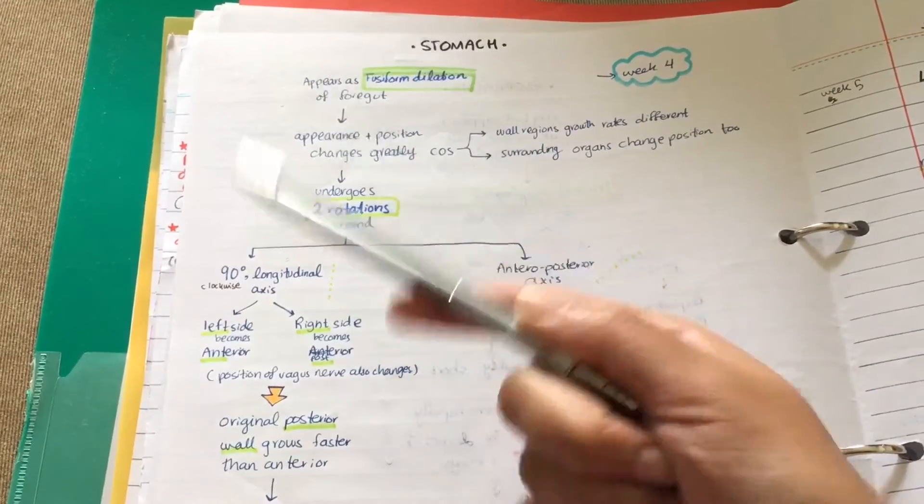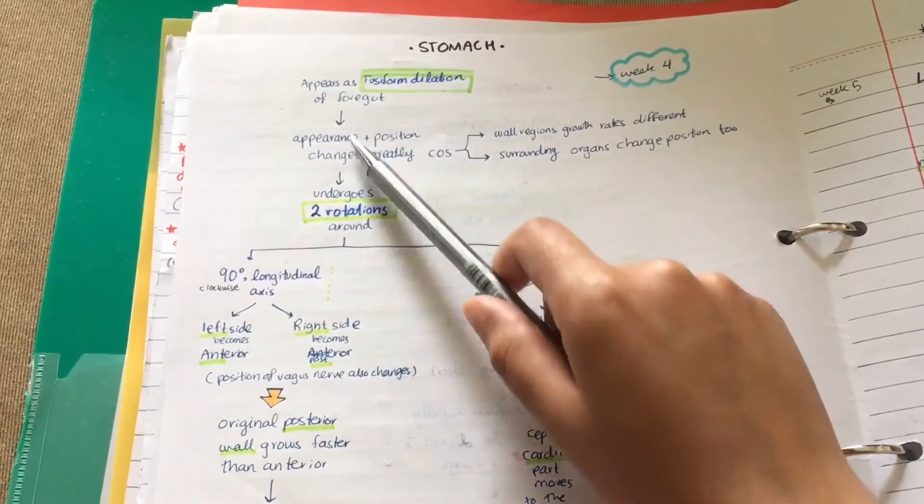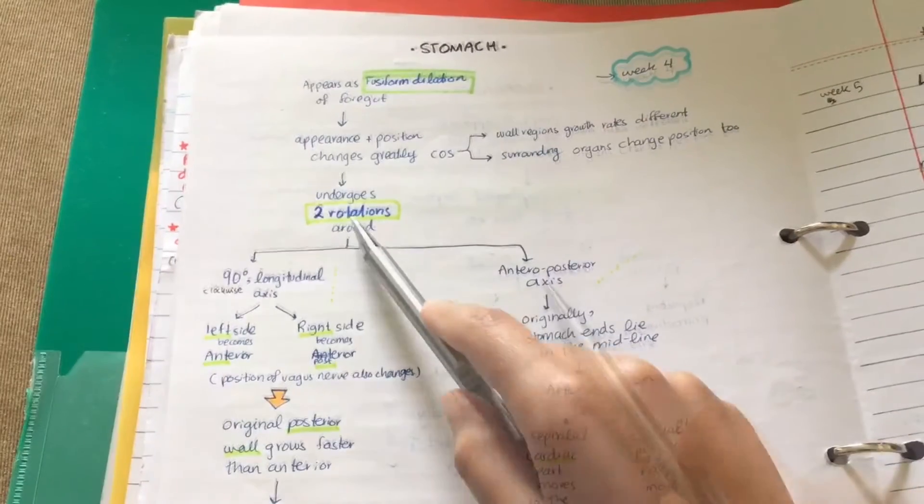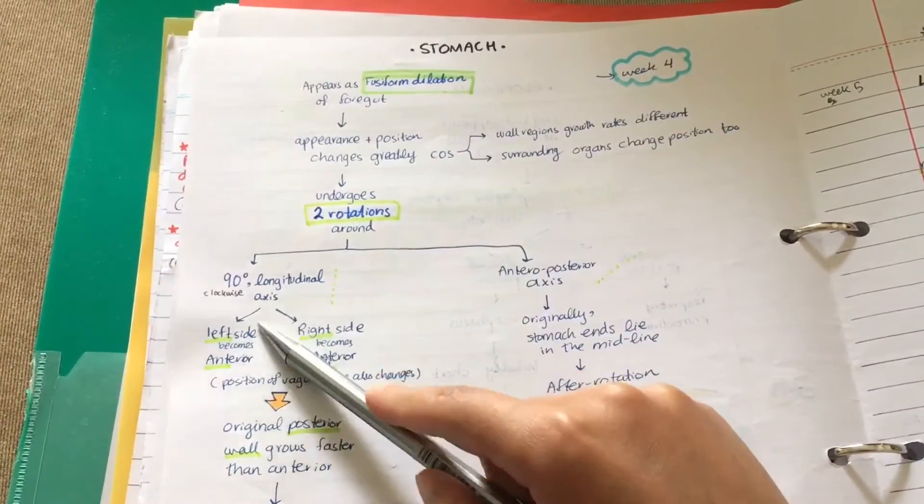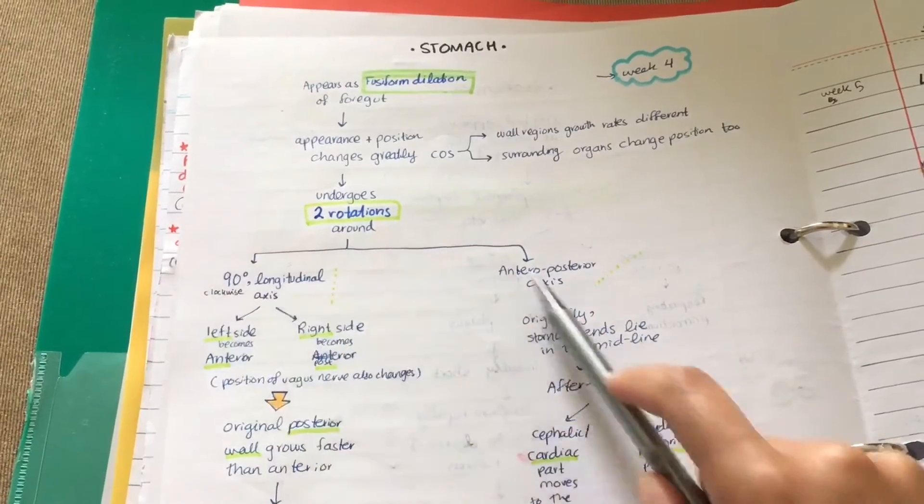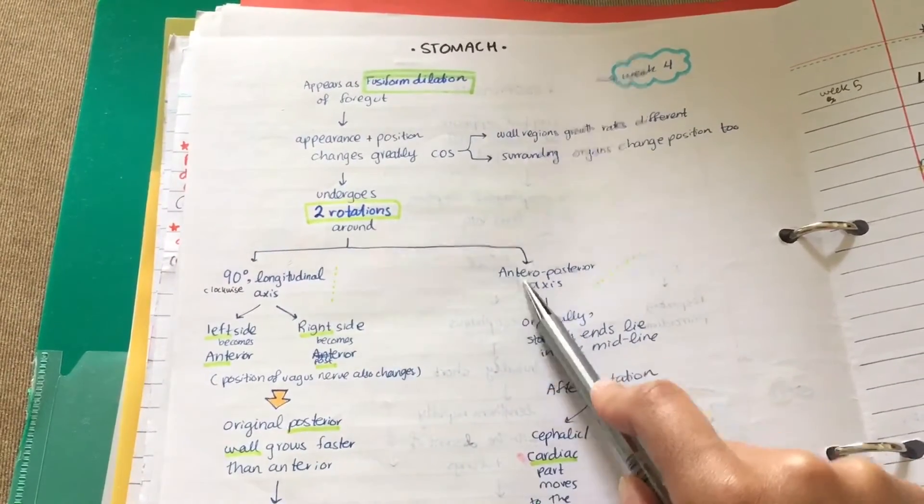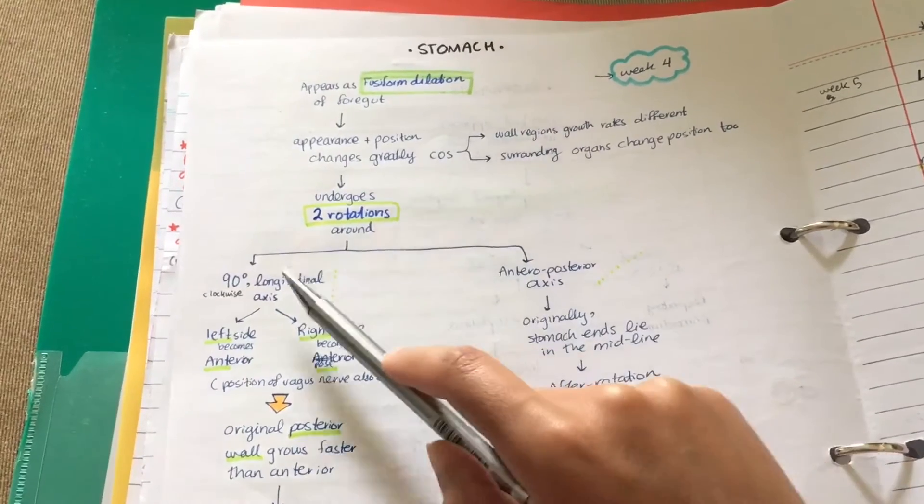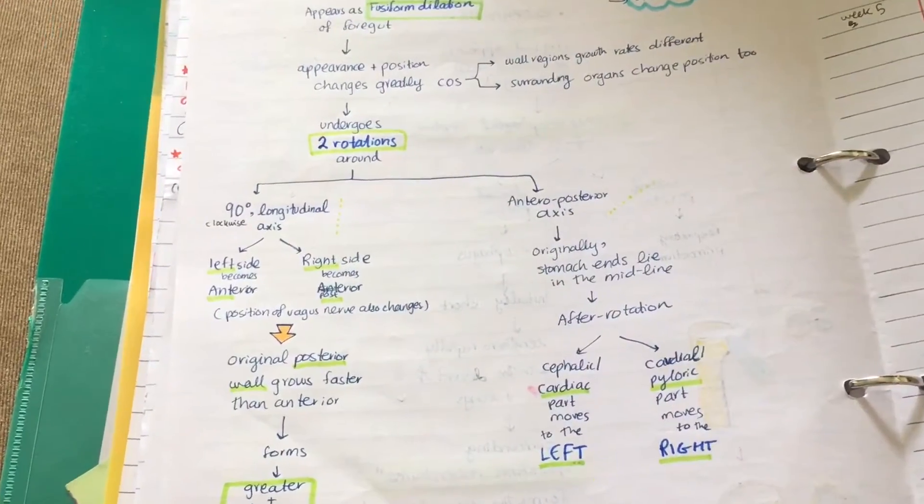That is why the stomach undergoes two rotations. The first rotation is around a 90-degree longitudinal axis which is clockwise, and the second rotation is around an anterior-posterior axis. Let's just zoom in a little.